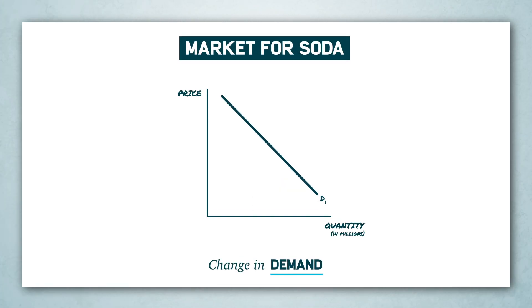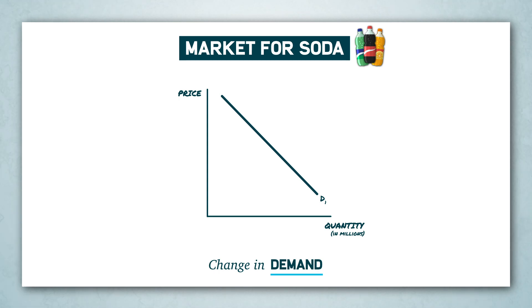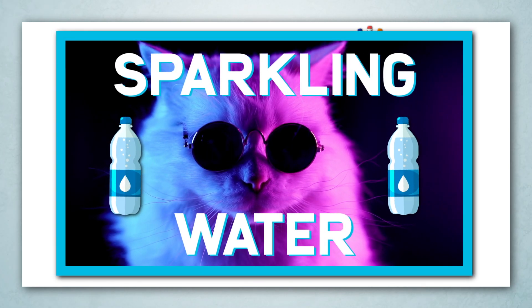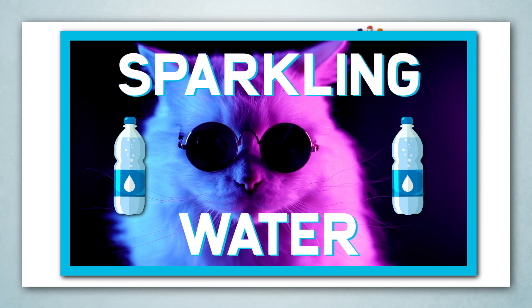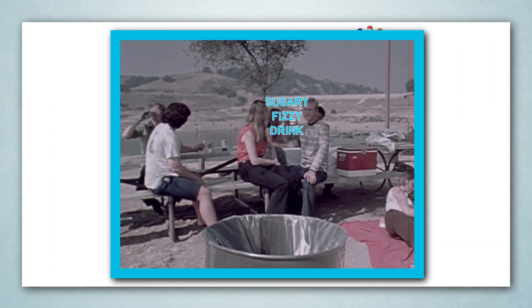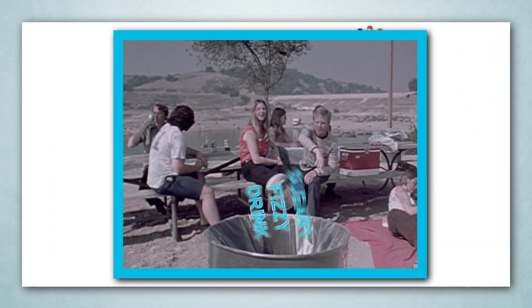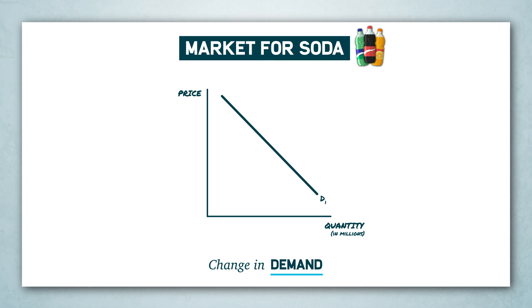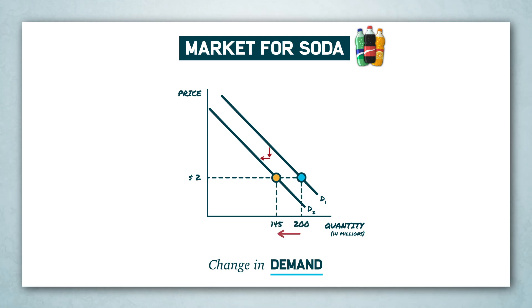Now let's look at a change in demand. In this case, a decrease in demand of sugary fizzy drinks is caused by a viral marketing campaign for naturally sweetened sparkling water. People just aren't as excited about sugary fizzy drinks anymore. The decrease in demand shifts the entire demand curve down and to the left, and leads to a lower quantity at every price.